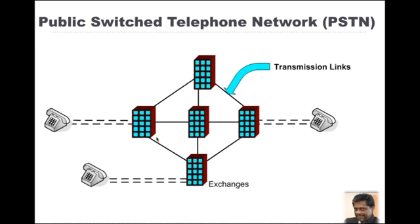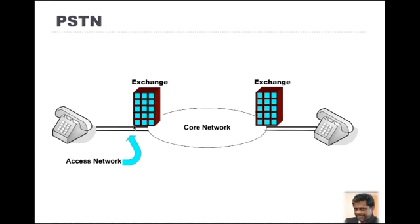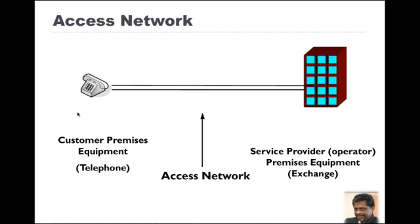In this diagram, you can see that the telephone exchanges are connected by transmission links, and the telephone is connected to the exchange. The PSTN network can be divided into two parts: the access network and the core network. The access network is the part from the telephone to the exchange, and the exchanges are connected via the core network.